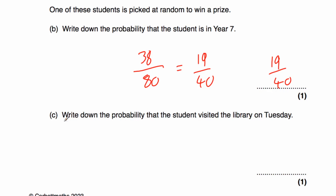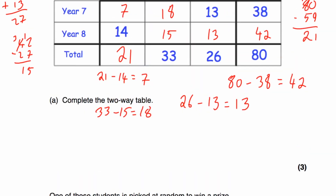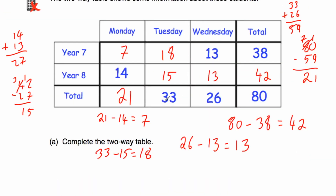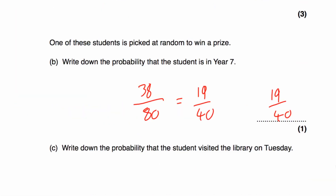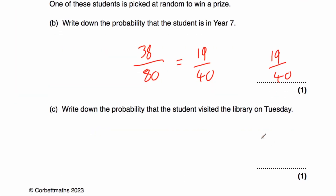Part C says: write down the probability that the student visited the library on Tuesday. There are 80 students altogether and 33 students visited on Tuesday. So it's going to be 33 out of 80 — 33 eightieths.